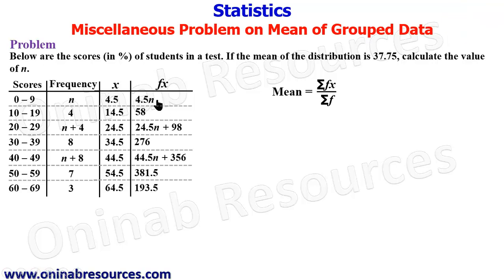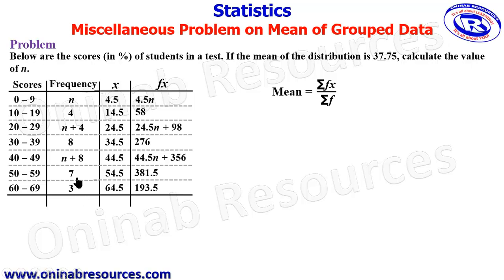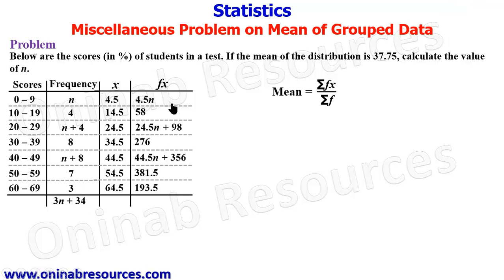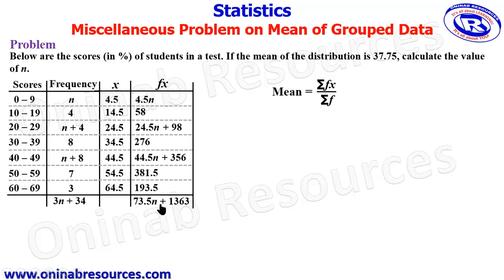Now we find the summations. For Σf: summing the n terms gives 3n, and the constants 4+4+8+7+3+8 = 34 — wait, totalling all constants gives 34 — so Σf = 3n + 34. For Σfx: summing the n terms gives 4.5n + 24.5n + 44.5n = 73.5n, and the constants 58 + 98 + 276 + 356 + 381.5 + 193.5 = 1363. So Σfx = 73.5n + 1363.